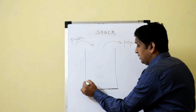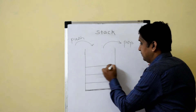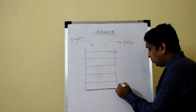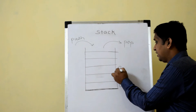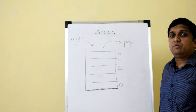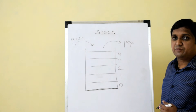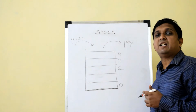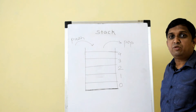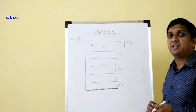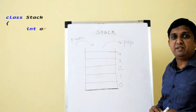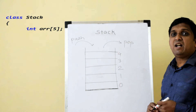Suppose this is an array of size 5, so indices vary from 0 to 4. When implementing stack in C++, I take a class named stack. Inside that class I declare an array as a data member to hold the elements.